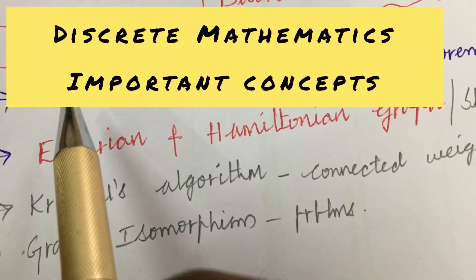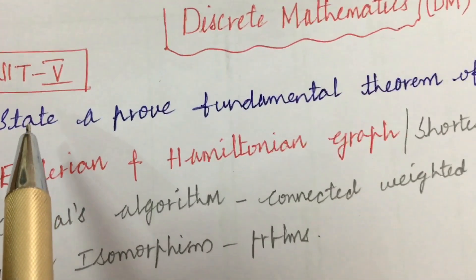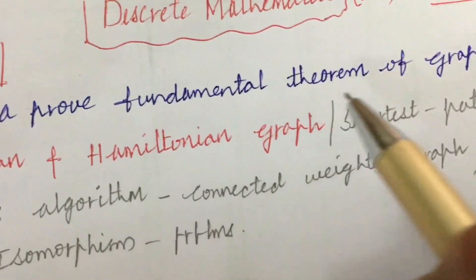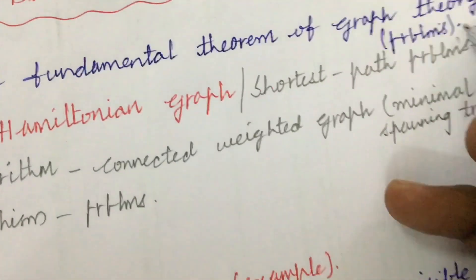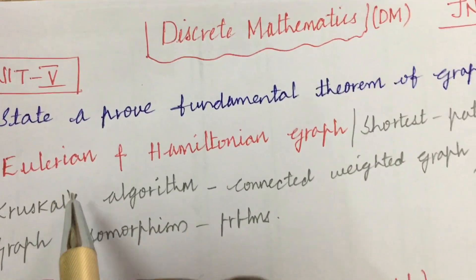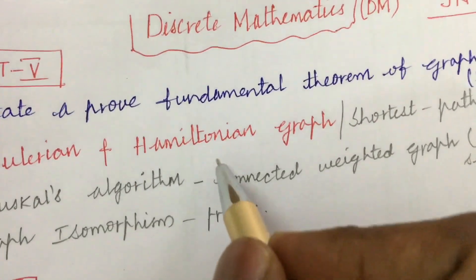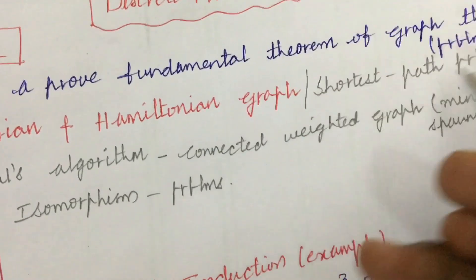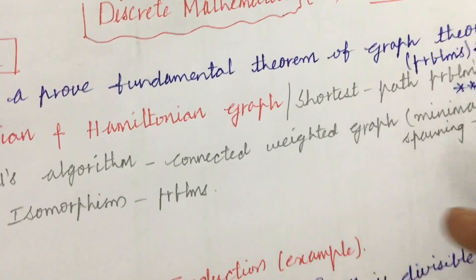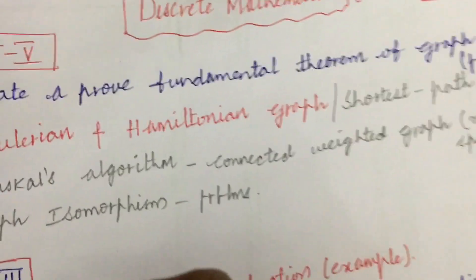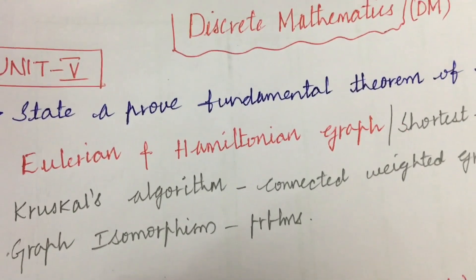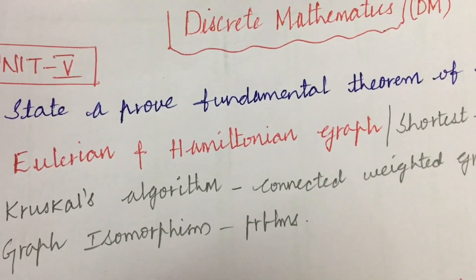I have come up with the 8th question first. The first and foremost sure-shot question is related to graph theory: state and prove the fundamental theorem of graph theory as well as problems related to it. Eulerian and Hamiltonian graphs as well as shortest path problems have appeared many times in previous year question papers. Do not expect a direct 15-mark question — you can expect 10, 5, or a 7 and 8 combination.